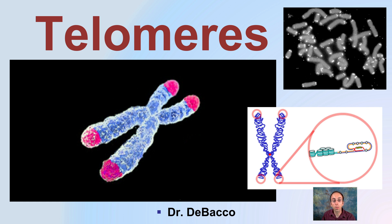Here we're going to look at telomeres, which are shown here as the end caps of chromosomes. They're a nice bright pink contrasting color here — the glowing image in the black and white — and they're circled and zoomed in on the cartoon image just above me.